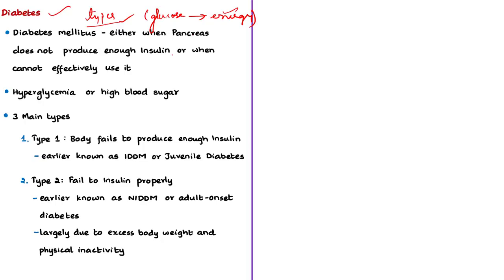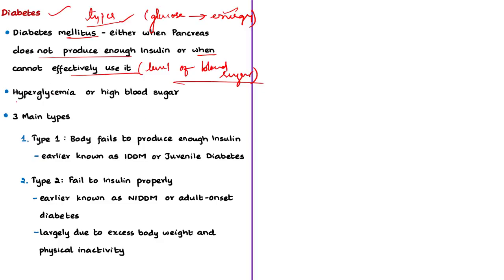Diabetes mellitus is a chronic disease that occurs either when the pancreas does not produce enough insulin or when the body cannot effectively use the insulin it produces to manage blood sugar levels. In simple terms, diabetes is a situation when blood glucose in a person's body is too high or does not reach the blood cells. When this rise in blood sugar is uncontrolled, it results in hyperglycemia, or high blood sugar, which over time can cause serious damage to many body systems — especially the nerves and blood vessels.